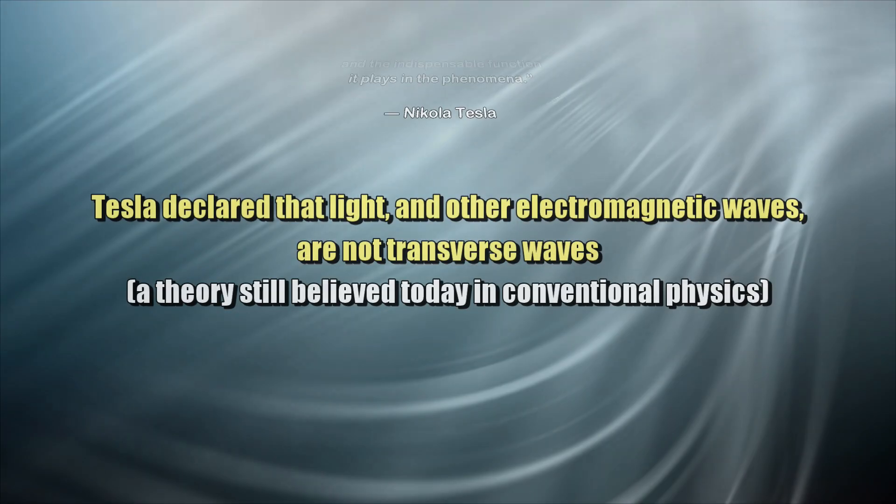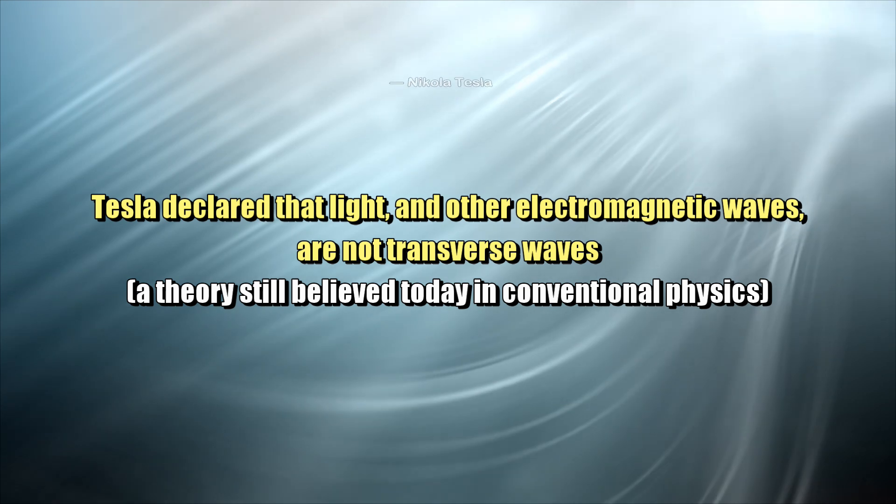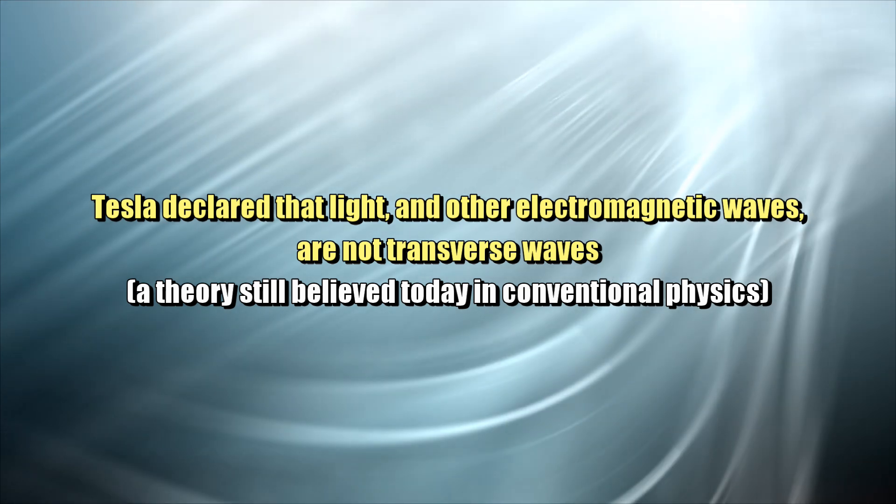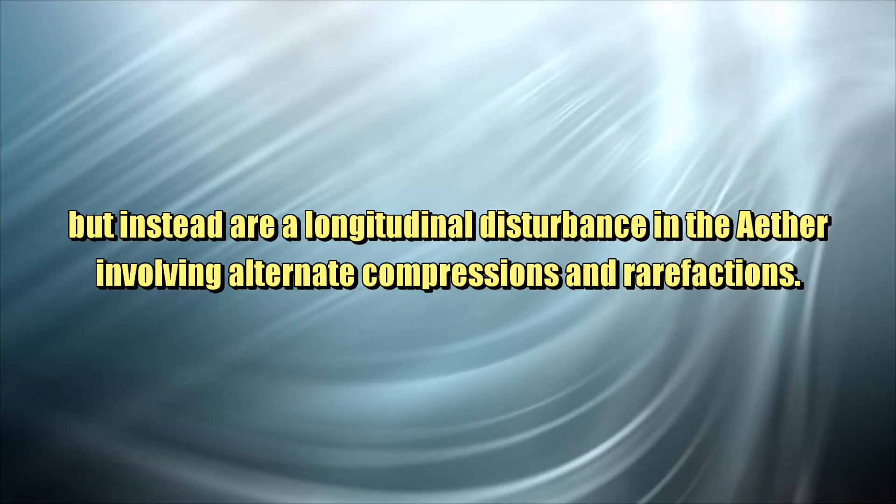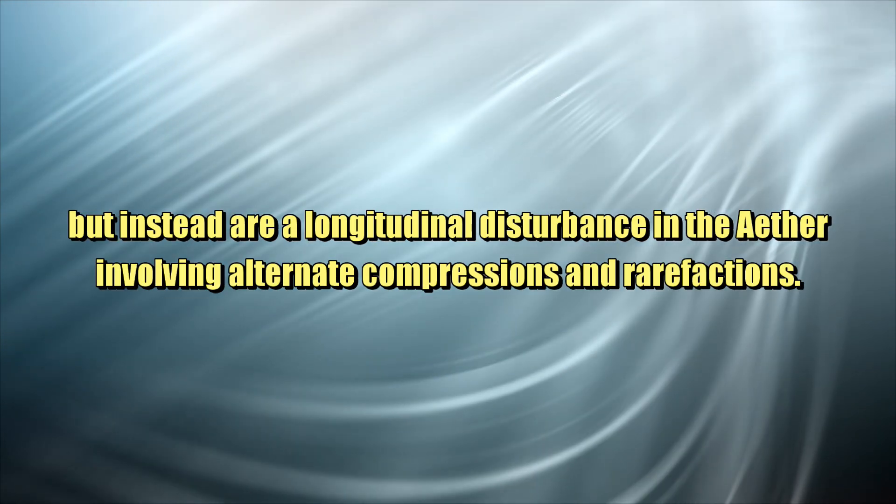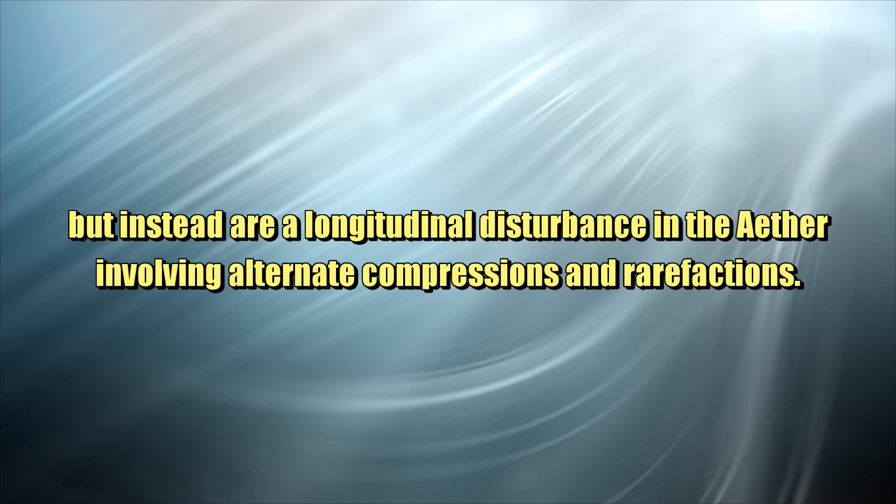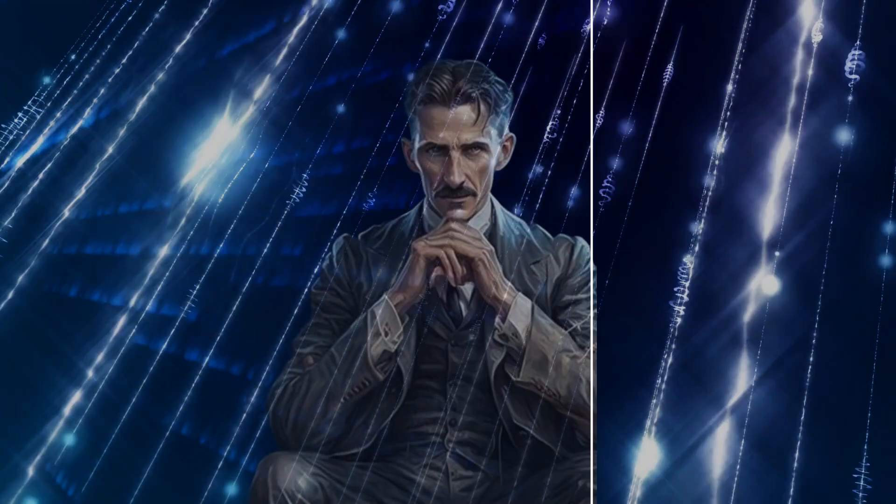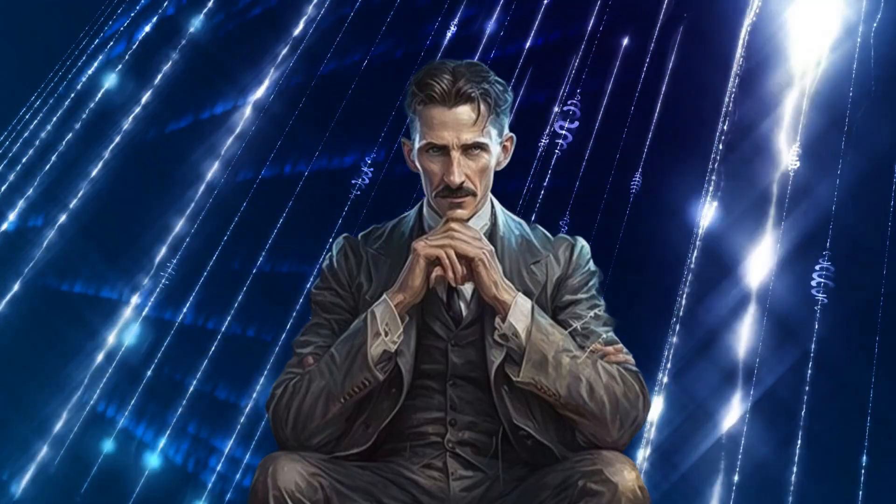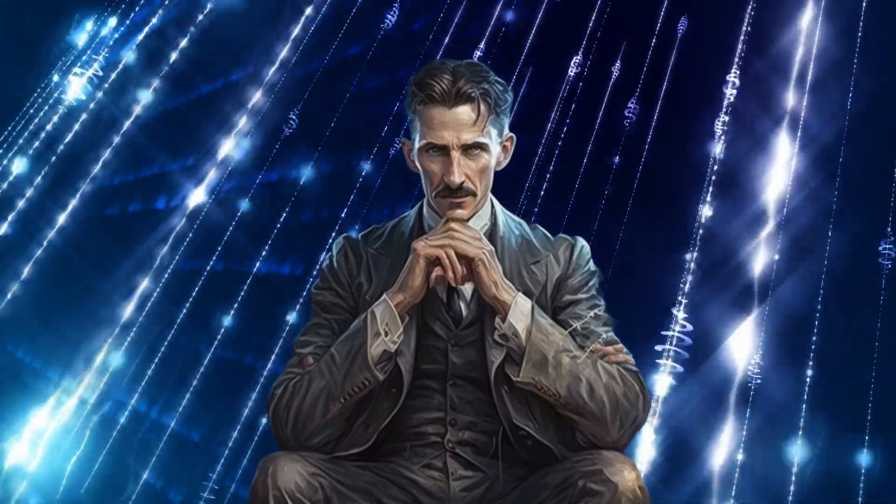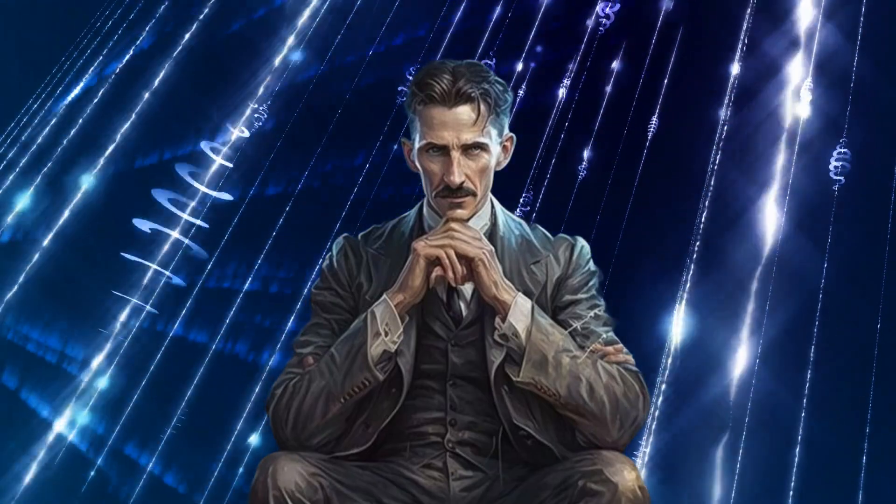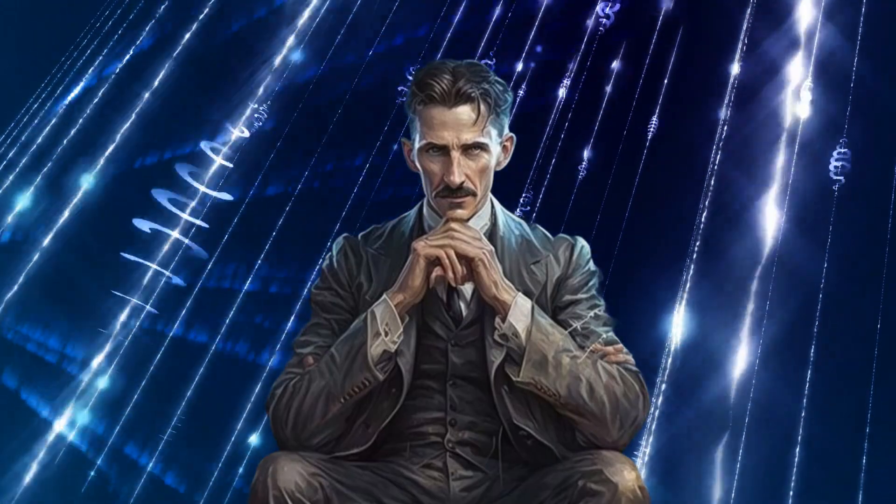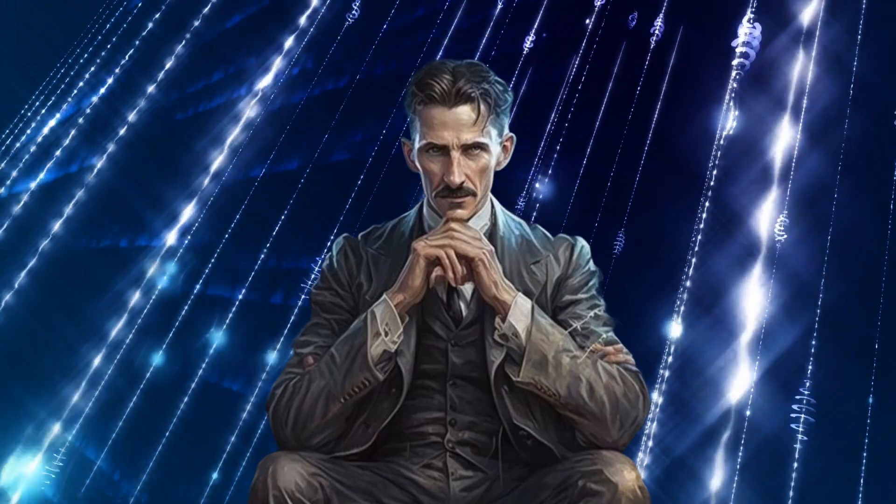Tesla declared that light and other electromagnetic waves are not transverse waves, a theory still believed today in conventional physics, but instead are a longitudinal disturbance in the ether, involving alternate compressions and rarefactions. In his own words, light could be nothing else than a sound wave in the ether. Since light has such a constancy of velocity, light can only be explained by assuming that light is dependent solely on the physical properties of the medium, especially density and elastic force.